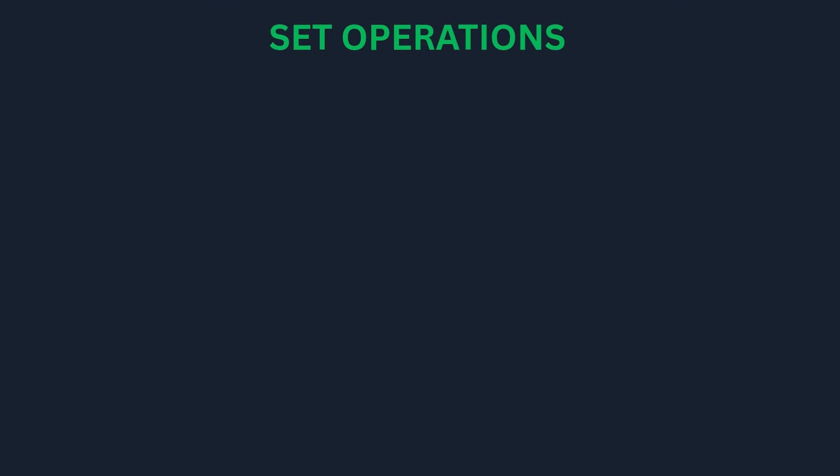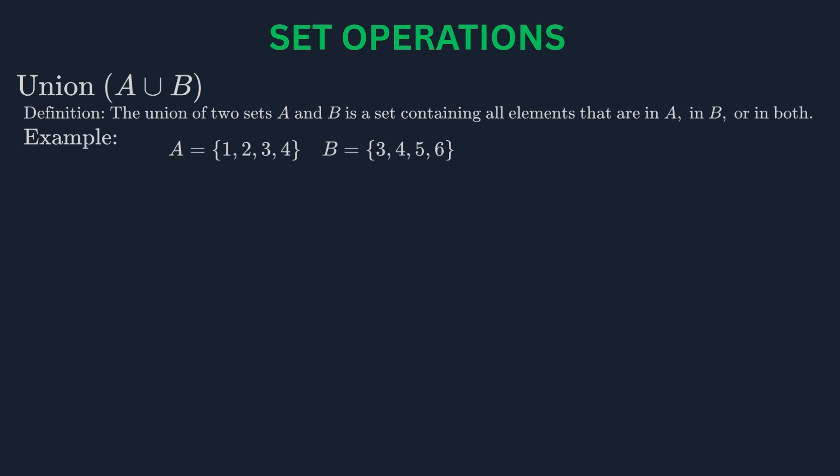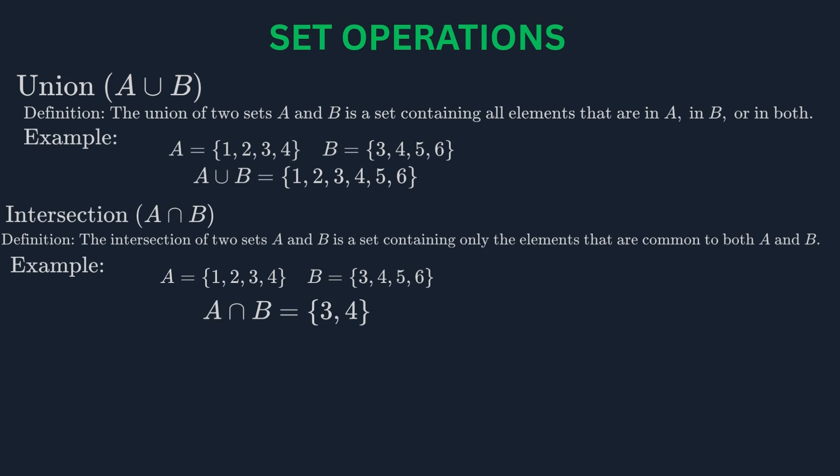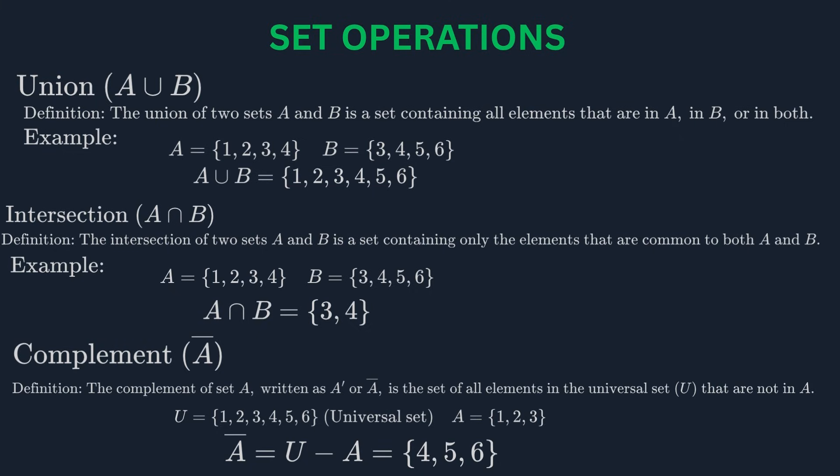We can also perform operations on sets to create new sets. These are very similar to the logical connectives we just saw. The union of two sets A and B, written A union B, is the set of all elements that are in A or in B or in both. The intersection A intersection B is the set of elements that are in both A and B. And the complement of A, written A-bar, is the set of all elements in the universal set that are not in A.